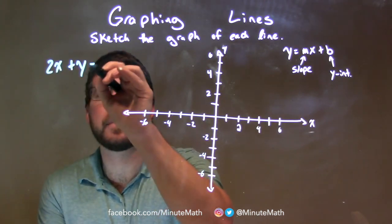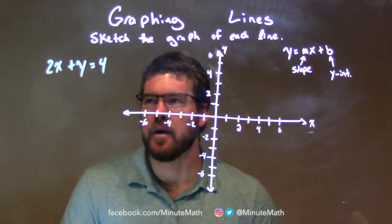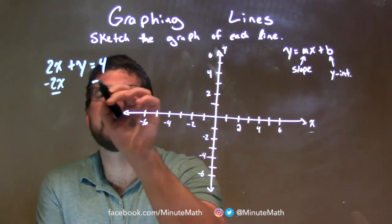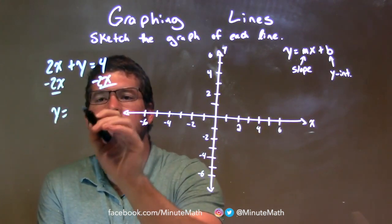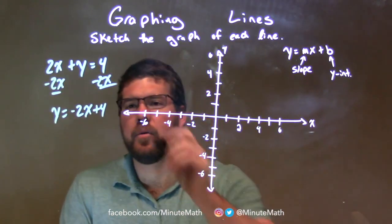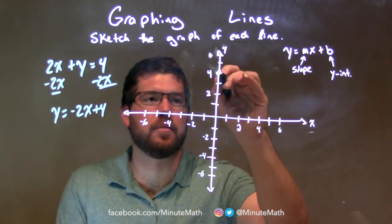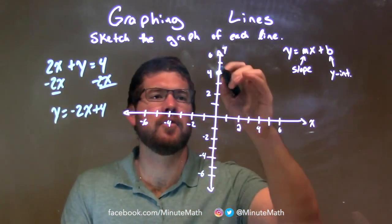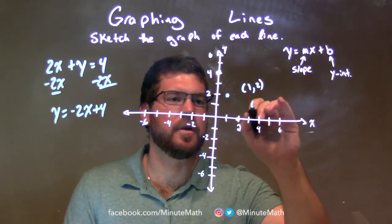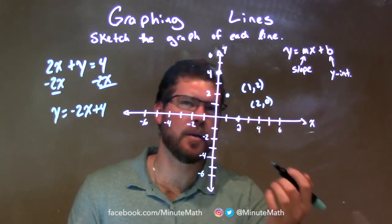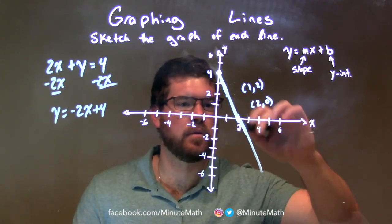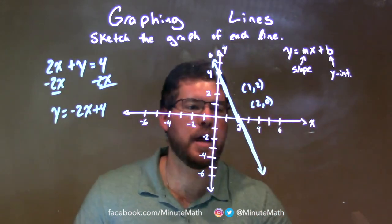2x plus y equals 4. What I need to do is get y by itself — this is standard form and I like to see it in slope-intercept form. So I subtract 2x from both sides, leaving y equals negative 2x plus 4. That is our slope-intercept form. So 4 is where we cross the y-axis — put a dot right there at 4. The slope is negative 2, so we go down 2 units over 1, then down 2 over 1 again. This point is 1 comma 2, and this line here passes through 2 comma 0. We connect these and there we have our line.